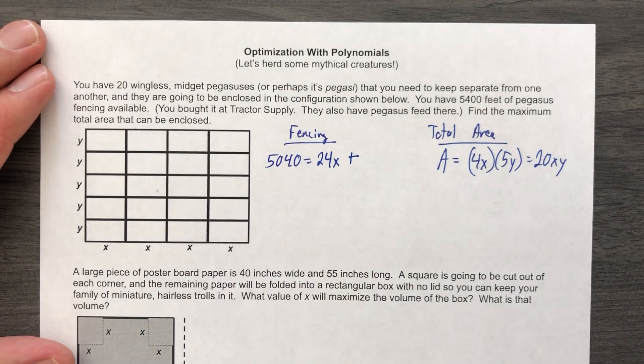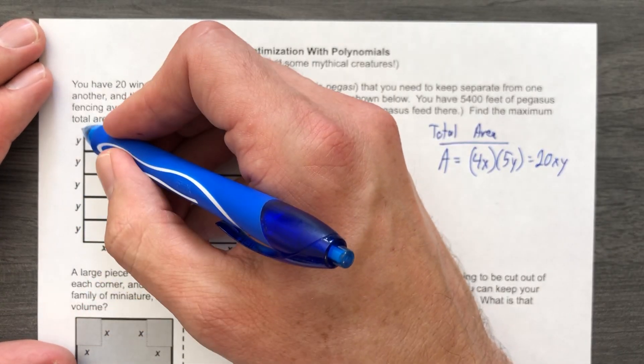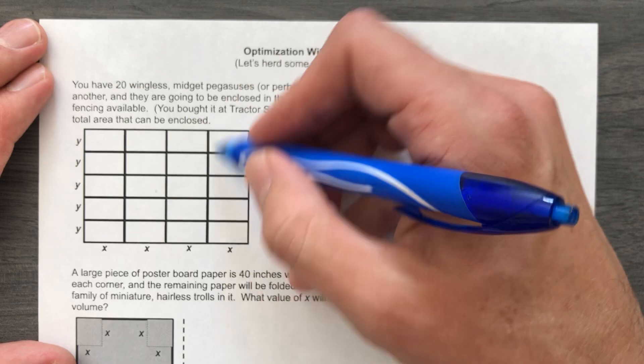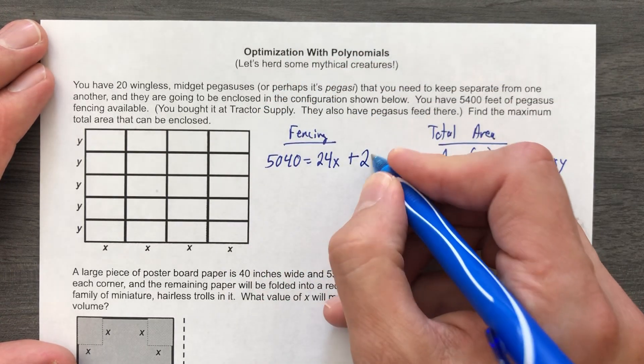Okay, let's figure out the Y's. 5, 10, 15, 20, 25. 25Y.